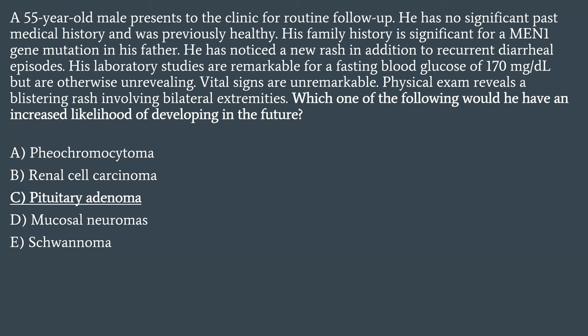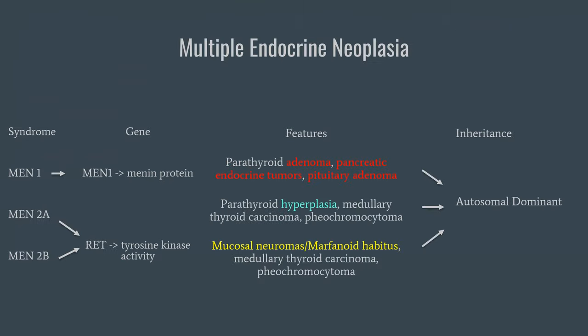You'll often see questions like these, putting together a syndrome and throwing in answer choices from various different syndromes, basically asking: do you have these syndromes separate in your brain? MEN1 features parathyroid adenoma, pancreatic endocrine tumors, and pituitary adenomas. The inheritance pattern is autosomal dominant — the patient's father had it, and on the test question the patient almost always has the syndrome and is going into that condition.